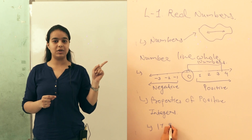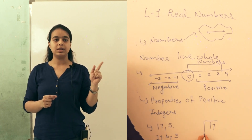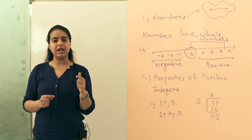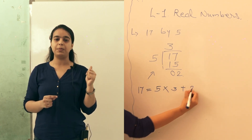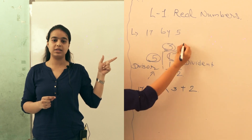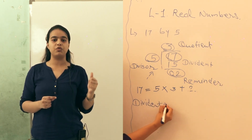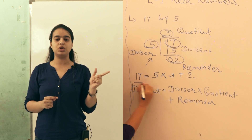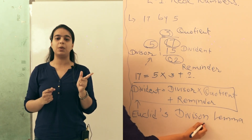Here I am taking 2 integers: one is 17 and another is 5. I am going to divide 17 by 5. 5 threes are 15, remainder 2. So I can write 17 is equal to 5 multiplied by 3 plus 2. Here, 17 is the dividend, 5 is the divisor, 3 is the quotient, and 2 is the remainder. In another way I can write: dividend is equal to divisor multiplied by quotient plus remainder. This is nothing but Euclid's Division Lemma, which is the very first topic from your first chapter.